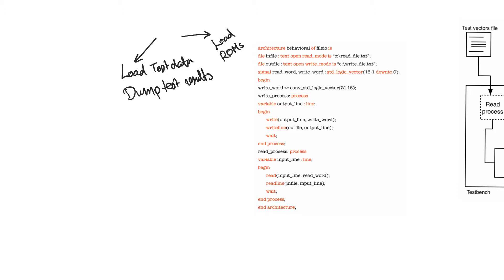In order to use files within VHDL, you have to declare two packages: the textIO package and the standard logic textIO package. The first package is the main one used to allow file access, and it declares two data types — the file type and the line type — and also declares four functions: read, write, readline, and writeline. The second package redefines these functions to accept arguments of standard logic data type instead of bit data type, which we will mostly be using.